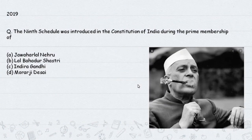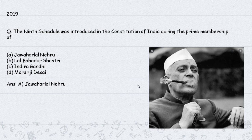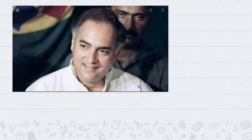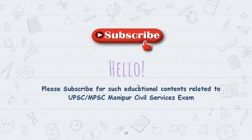Question from 2019: The Ninth Schedule was introduced in the Constitution of India - when? Answer: By the First Constitutional Amendment in 1951 under Prime Minister Jawaharlal Nehru, not Rajiv Gandhi. The Ninth Schedule was introduced to protect land reform laws, specifically the zamindari abolition acts, from fundamental rights challenges.